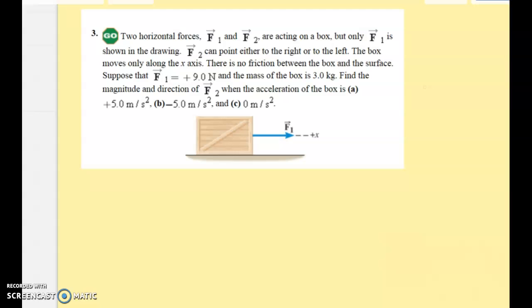Take a look at number 3. It says two horizontal forces, F1 and F2 are on the box. You've got to figure out what F2 looks like. The box moves in the x direction only and there's no friction or anything. Suppose that F1 is 9 newtons to the right and the mass of the box is 3 kilograms. Find the magnitude and direction of F2 when the acceleration of the box is positive 5, negative 5, and 0. When the acceleration is positive 5, there must be a net force to the right. When it's negative 5, there must be a net force to the left. When it's 0, there must be no net force.